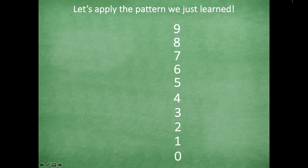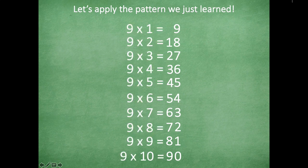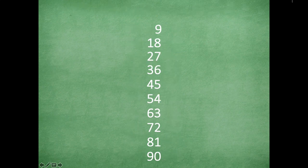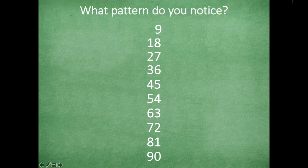Now I'm going to start in the tens place, starting at the bottom this time, so the number decreases each time: nine, eight, seven, six, five, four, three, two, one, zero. Wait — zero-nine? That's not how we write nine, so we take away that leading zero, but it's like an imaginary zero for this strategy. Now I'll fill in the multiplication facts: nine times one equals nine, nine times two equals eighteen, nine times three equals twenty-seven, and so on until nine times ten equals ninety.